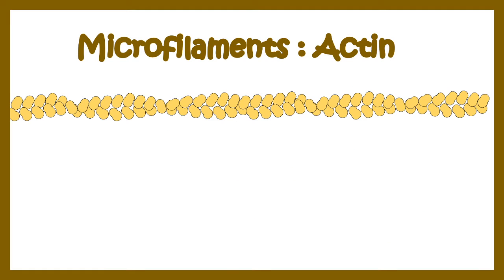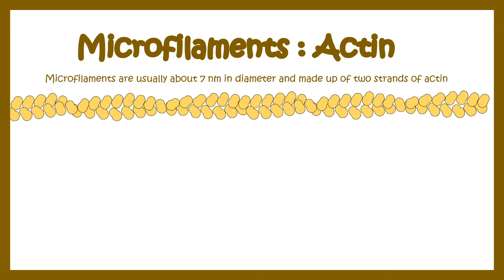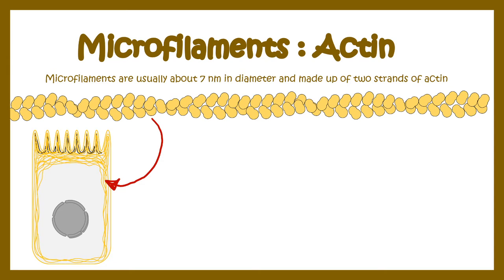In this video we'll talk about actin microfilaments. Microfilaments are usually 7 nanometers in diameter and they're made up of actin proteins. If we look at a cell generally, we would find these actin proteins or actin microfilaments in the periphery of the cell or the cortex of the cell, and they are present in any kind of eukaryotic cells.